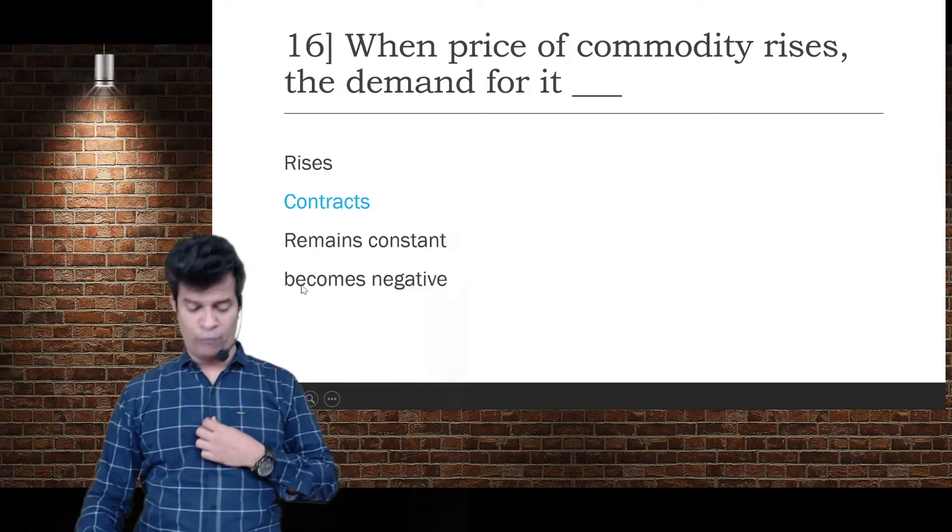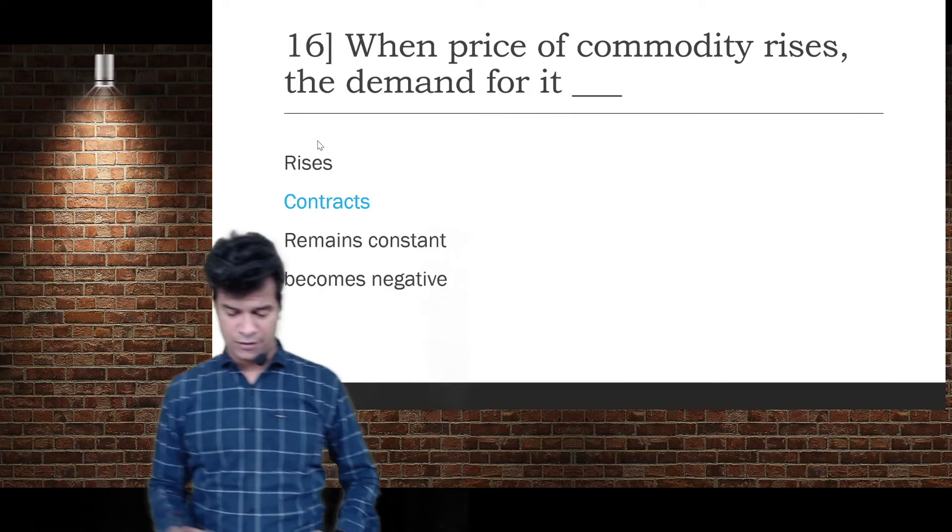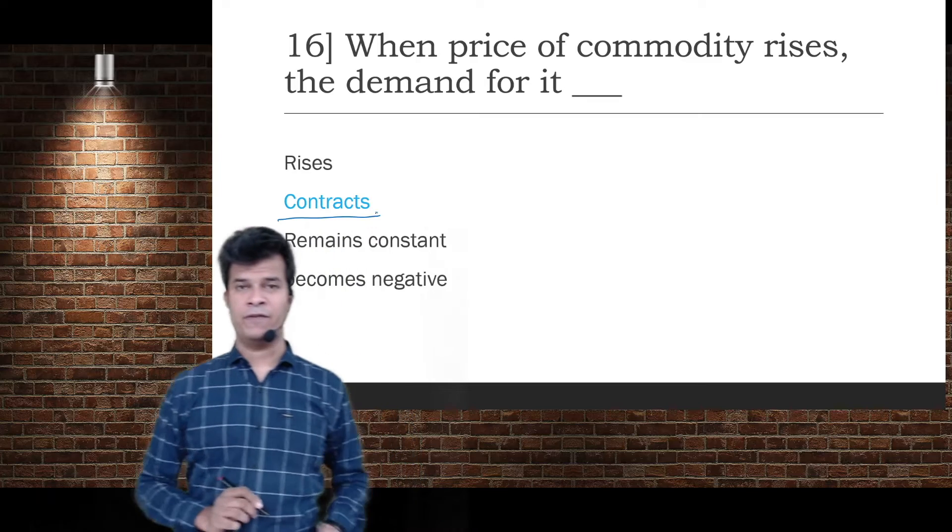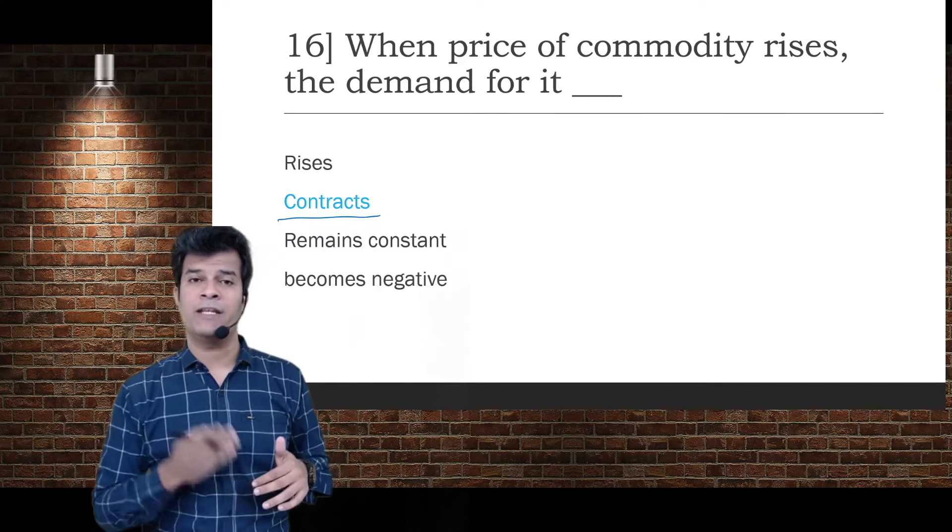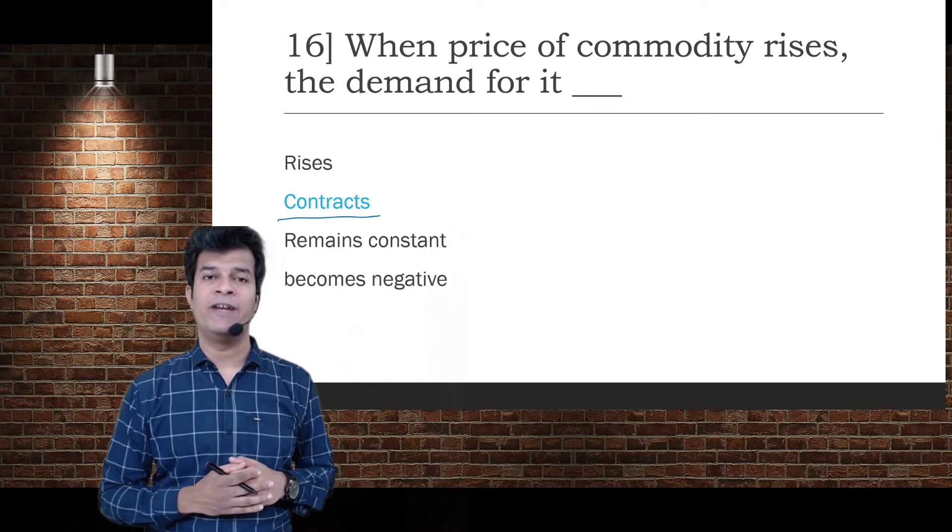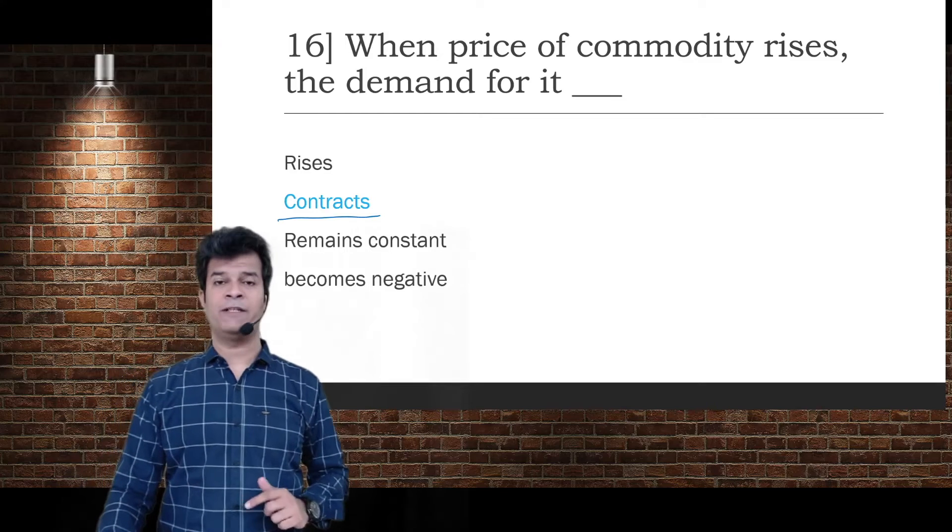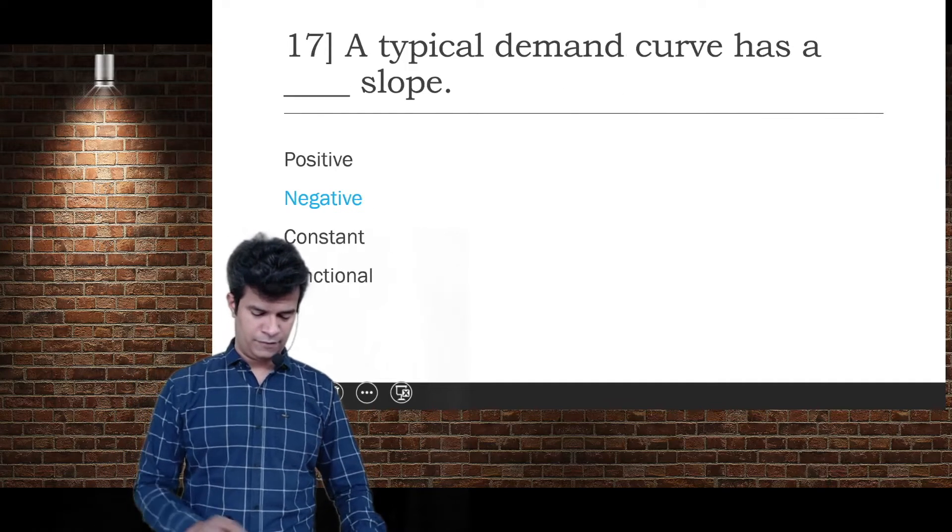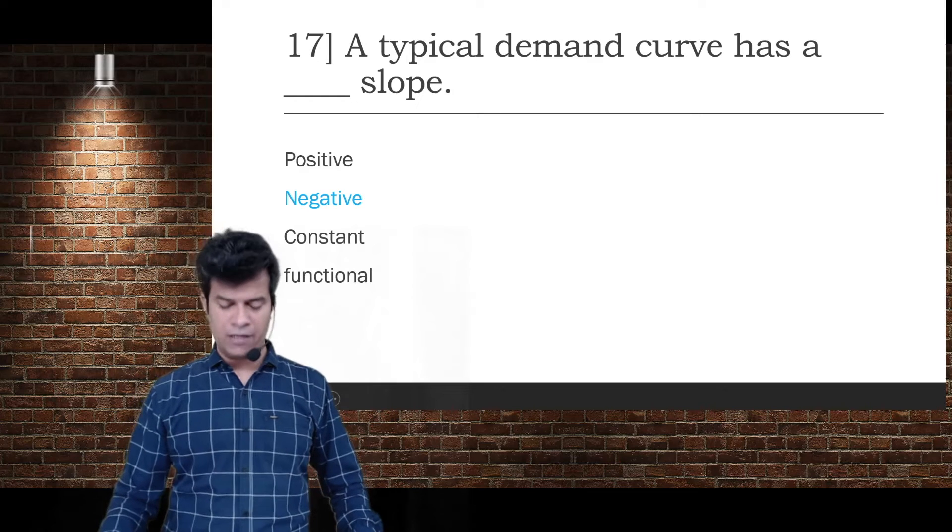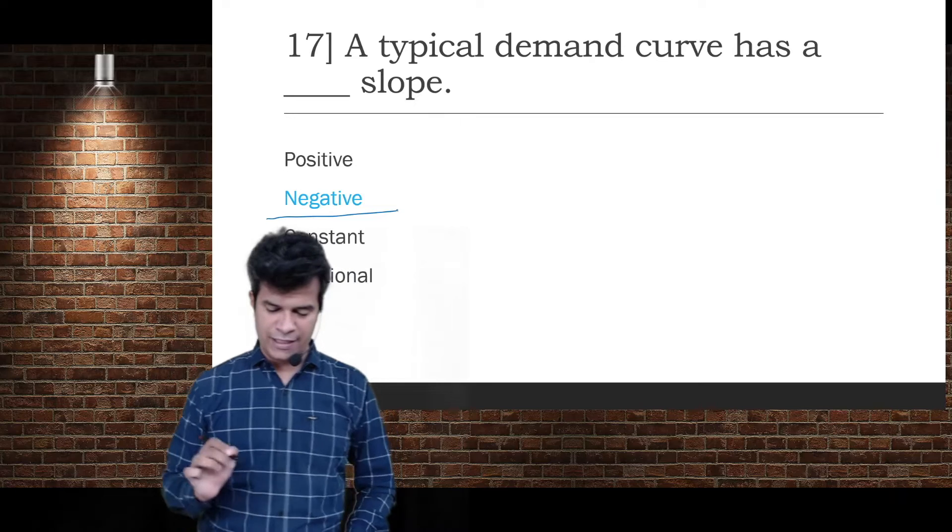When price of a commodity rises, demand for it contracts. When price affects demand, we call it variations - expansion and contraction. When demand decreases due to price, it's called contraction. A typical demand curve has a negative slope.